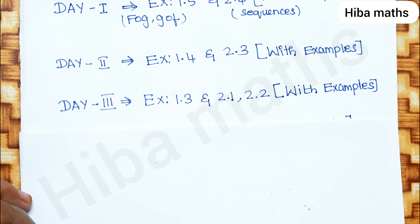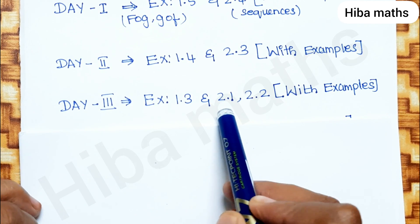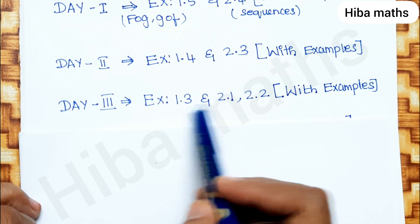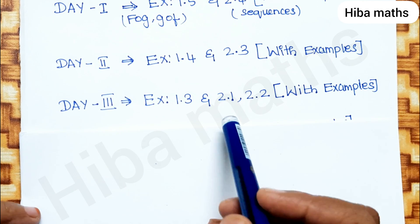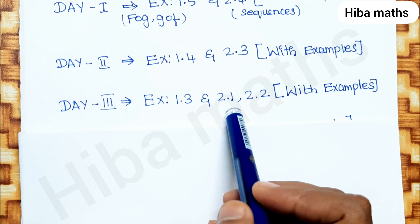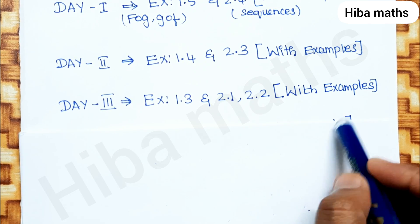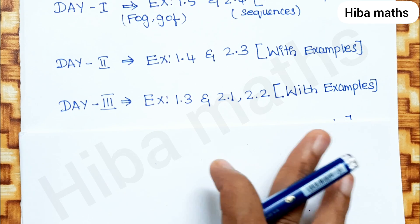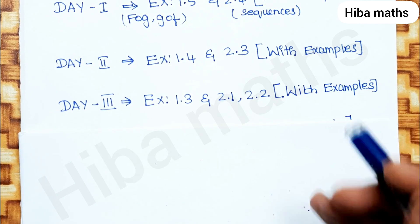Day 3: exercise 1.3, exercise 2.1, and 2.2. Exercise 1.3 is easy to do. Exercise 2.1 covers HCF and LCM, and 2.2 also covers LCM. You can solve those exercises. If you want to know how to follow the time schedule, we will tell you how to finish the 10-day challenge.